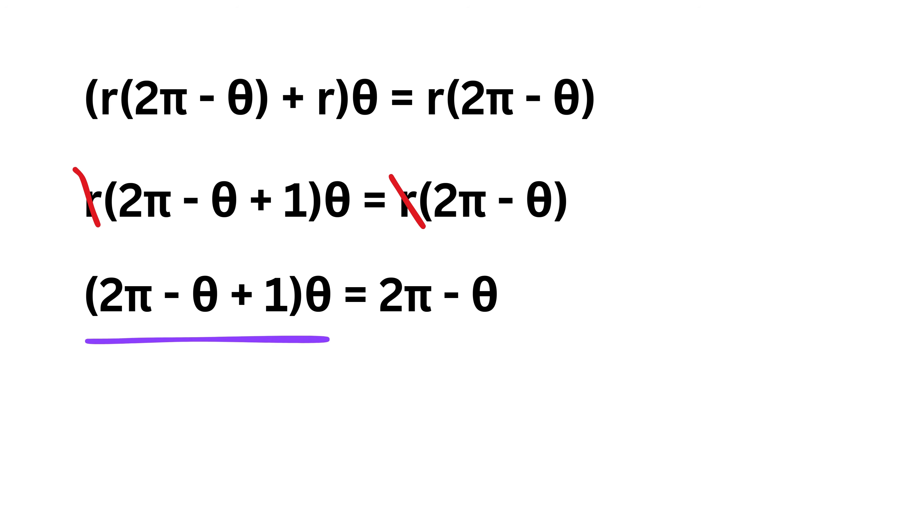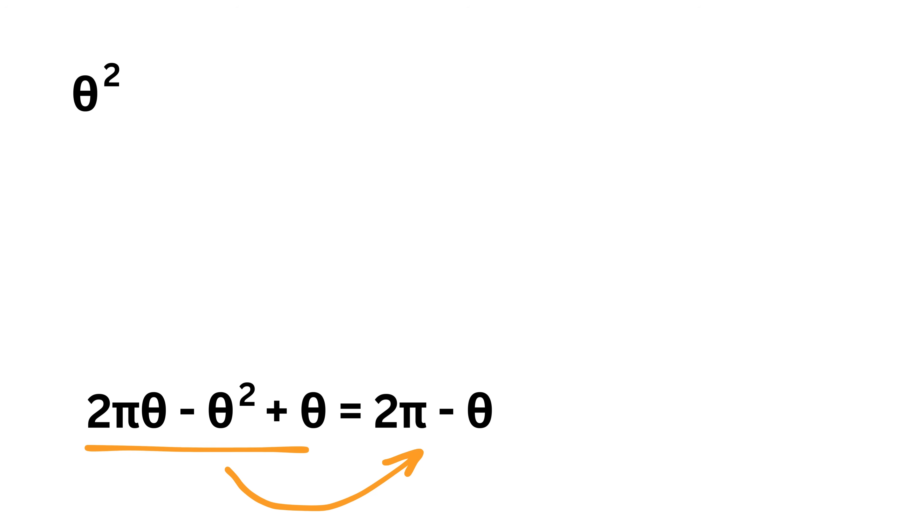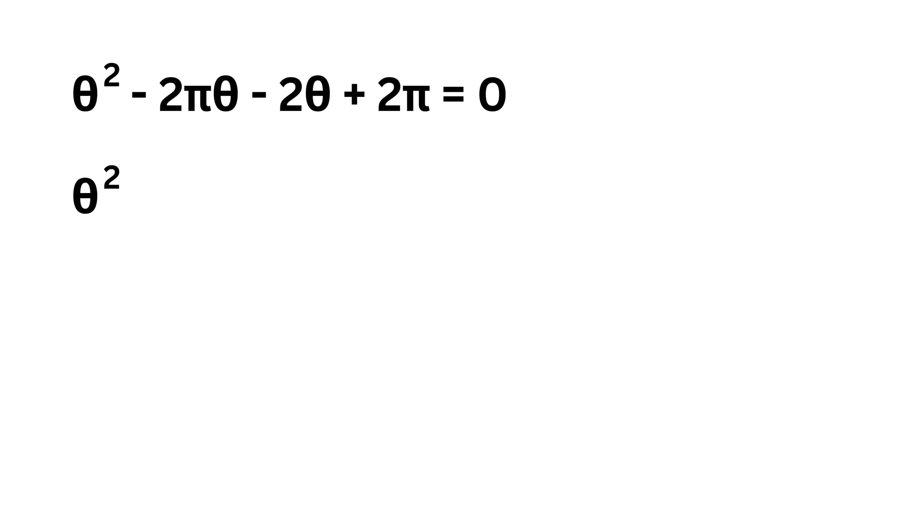Now expand this to get 2 pi theta minus theta squared plus theta equals 2 pi minus theta. Bring everything on the right hand side to get theta square minus 2 pi theta minus theta minus theta plus 2 pi equals 0. Both of them will become minus (2 pi plus 2) theta. Finally, we get theta square minus (2 pi plus 2) times theta plus 2 pi equals 0.